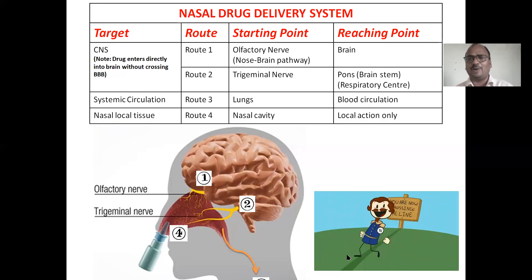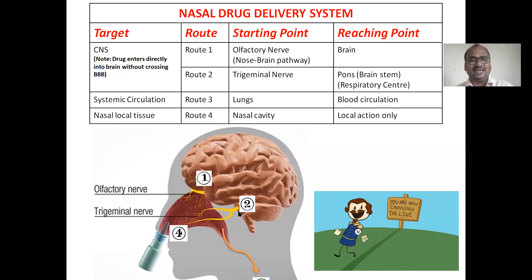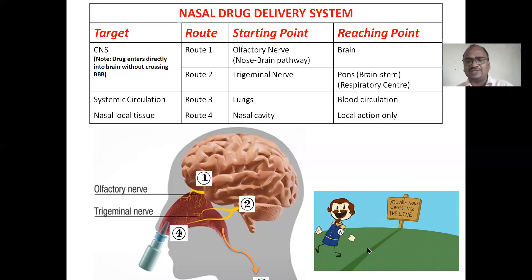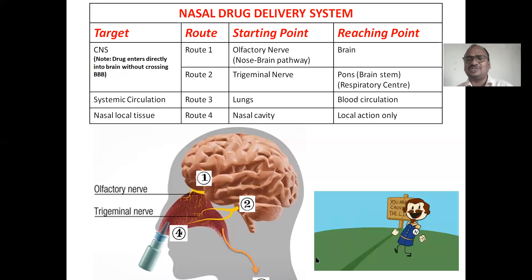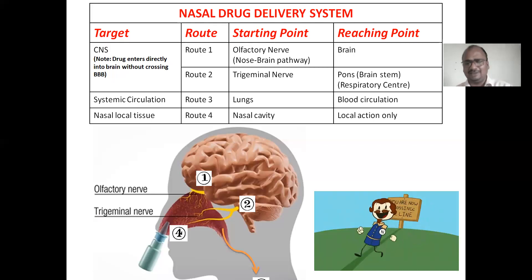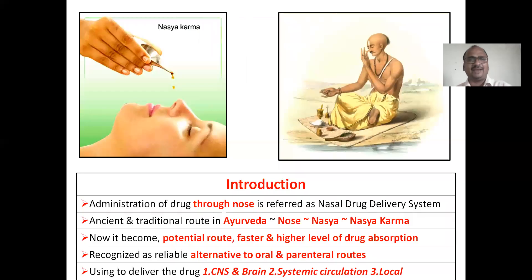See here how the drug molecules are nicely crossing the blood-brain barrier — that is the highlighted point. Just like a person crossing a line silently and very nicely, the drug crosses the blood-brain barrier.